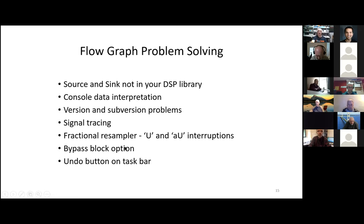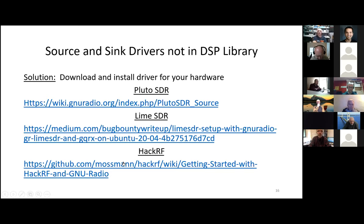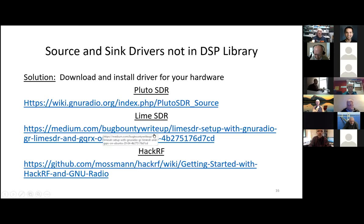I'll also talk about signal tracing, using a DSP block called a fractional resampler to get rid of U and AU interruptions, the bypass block option when troubleshooting, and the undo button in the taskbar — very important. If your source and sink drivers are not in the DSP library, it's simple to download and install the driver for your hardware. These links are dynamic and change over time — for Pluto SDR, Lime SDR, and HackRF, you can follow the respective links. These are the ones that were current in December 2020. The console in the lower left-hand corner shows the GRC version and other errors. Right at the top is the GNU Radio Companion version — for example, 3.7.11.3.4. Here's the block path: /usr/local/share/gnuradio/grc/blocks. It shows executing from the top block, opening with a USRP2 network, showing frame size and things.